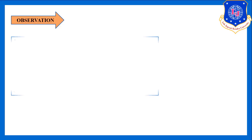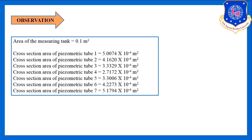The given data for the experiment are: the area of the measuring tank, which is 0.1 square meters, and the cross-sectional areas of the seven different piezometric tubes. These are the pre-known data provided for our calculations.